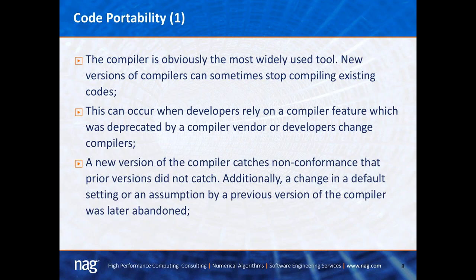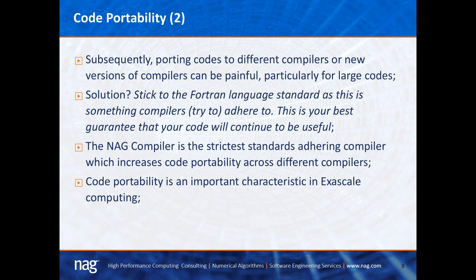I'll talk about code portability. The compiler is obviously the most widely used tool — everyone needs one to develop in Fortran. Sometimes when you upgrade compilers, they can stop compiling existing codes where previous versions did work. This can occur when developers rely on a compiler feature that was deprecated by a compiler vendor, for example if they went out of business, or developers change compilers. A new version of a compiler may catch a non-conformance that prior versions did not, or a default setting assumed by a previous version was later abandoned. Porting codes to different compilers can be really difficult, particularly for large codes.